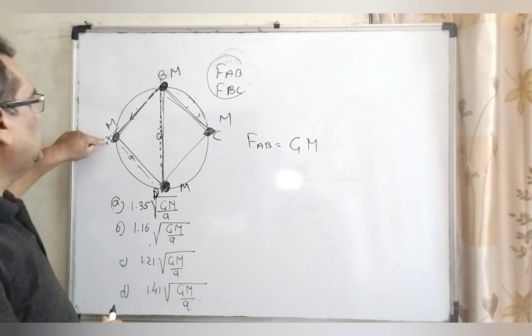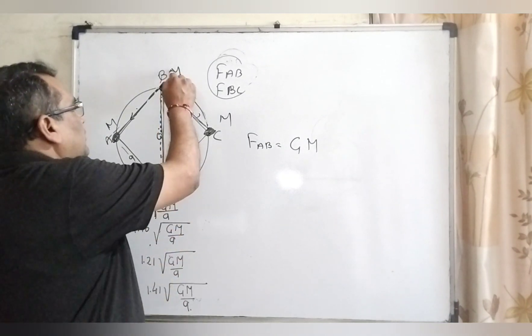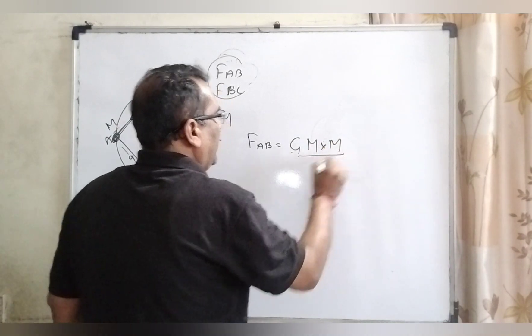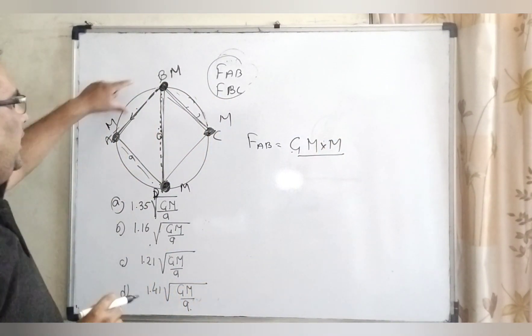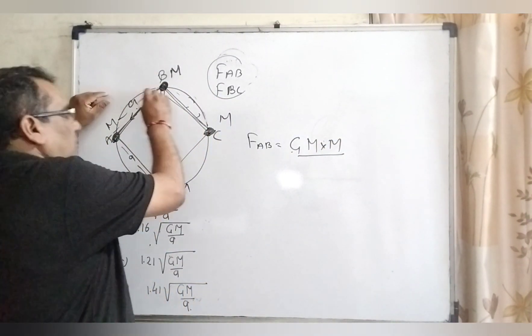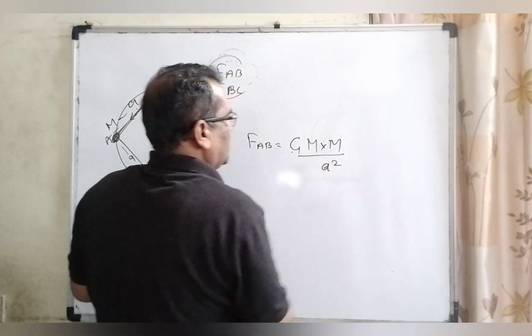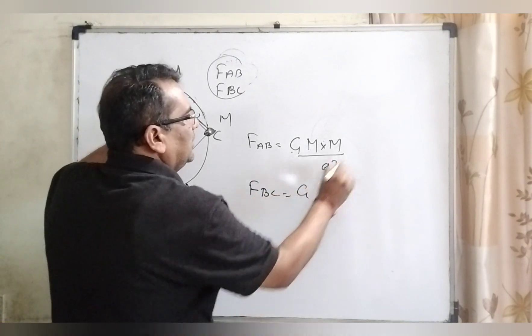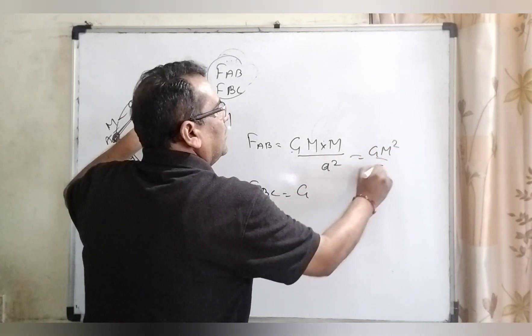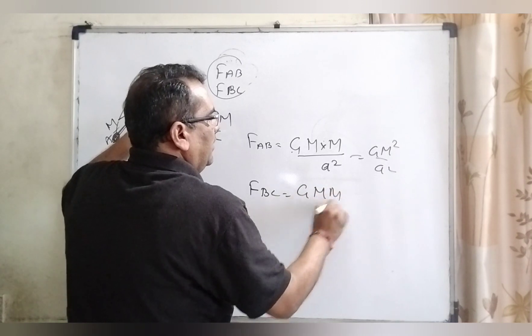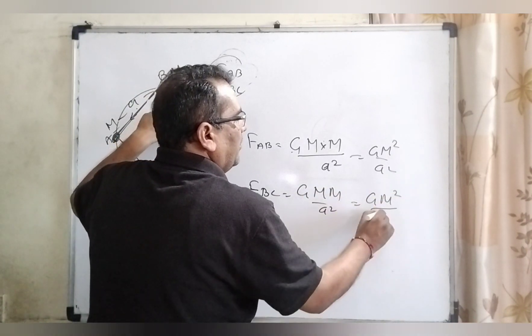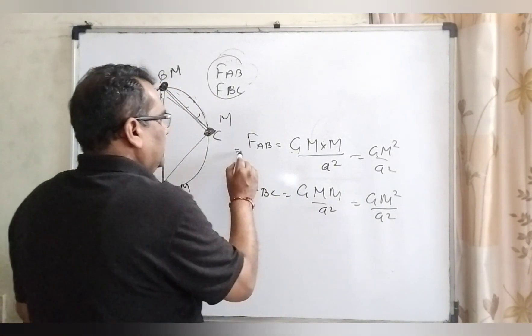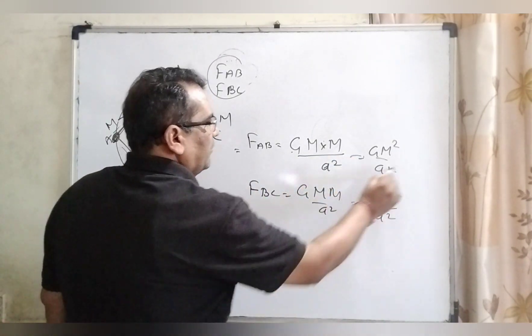Now, for the two bodies A and D, you know that we have given all the masses same. So therefore G, M, M and what is the distance between the A and D? That is A. So A square. And similarly, F of BC is again M, M and A square means GM square upon A square. So let we consider they are equal. So therefore we consider F.